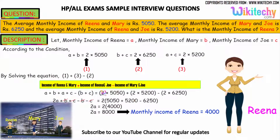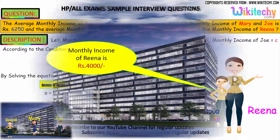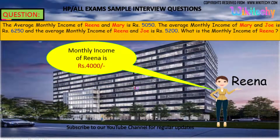So 2 into 5050, plus 2 into 5200, minus 2 into 6250. That gives 2A equal to 2 into 4000, so A is equal to 4000. Reina's monthly income is Rs. 4000. That is the answer.